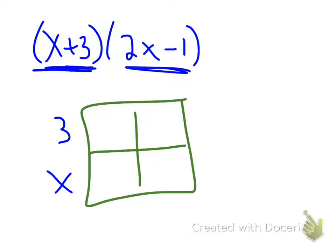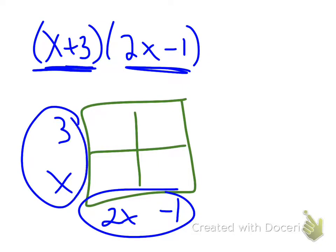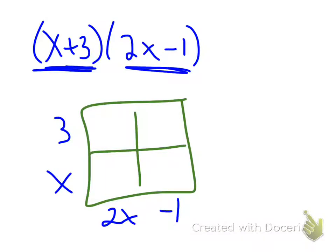And the other one I always put on the bottom, 2x minus 1. Now they could switch, and I could put the x plus 3 on this side, and the 2x minus 1 on this side. It doesn't matter. I could also take the x plus 3 and move it on that, or the 2x minus 1 I could put on the top. But just for consistency's sake, I'm going to set it up like this.